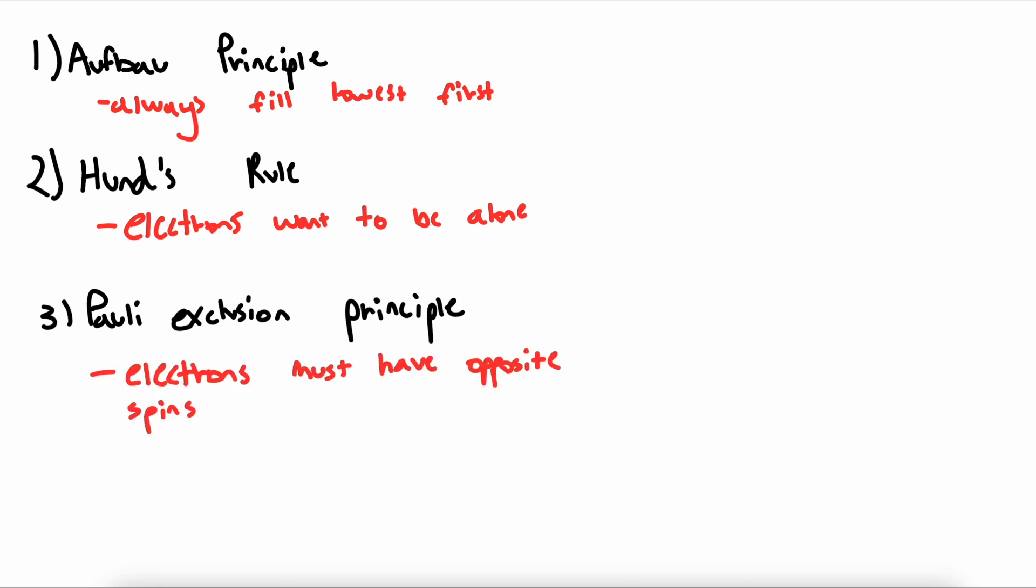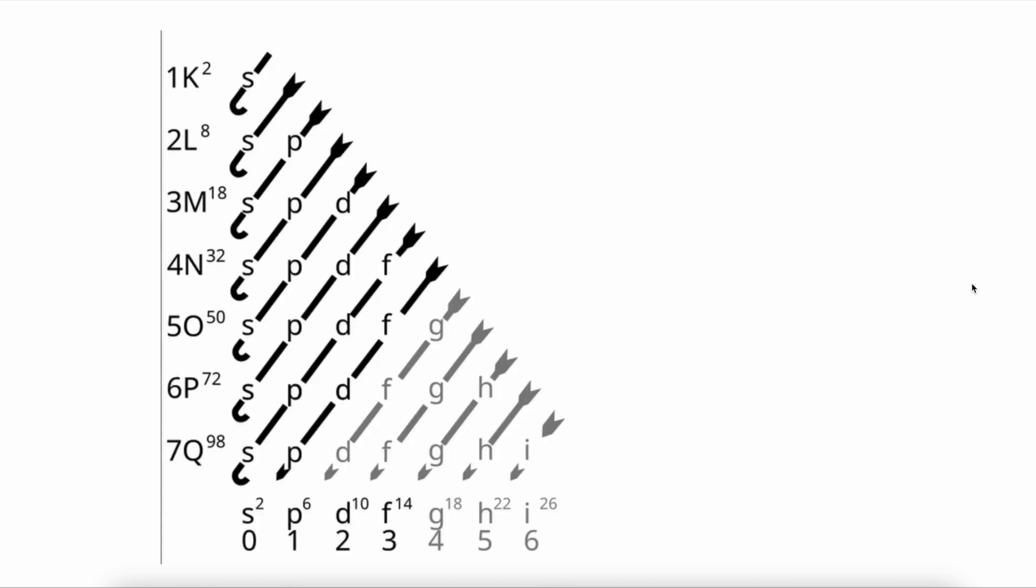There is a specific order in which electrons will fill sublevels, and that is denoted by the following chart. Let's break down this chart to fully understand it.